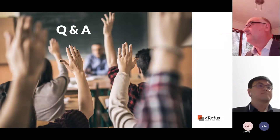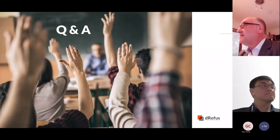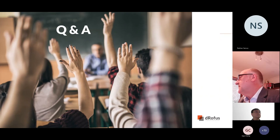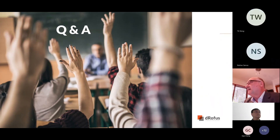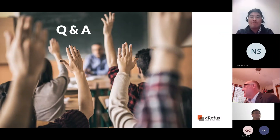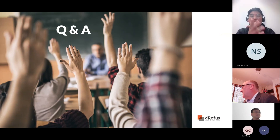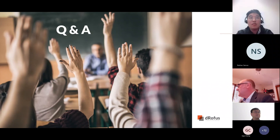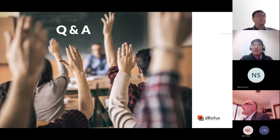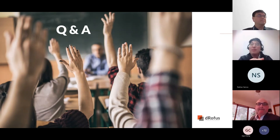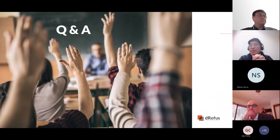The first question goes to the guys from VBIS: does VBIS have detailed mapping from UniClass and OmniClass through to VBIS to enable that migration if required? The short answer is yes, we do. Please feel free to reach out to us — we do have a process in order to communicate how that would occur, but happy to have a chat with you afterwards to see how we might be able to help.